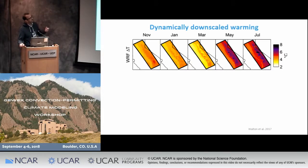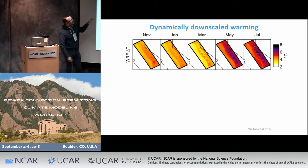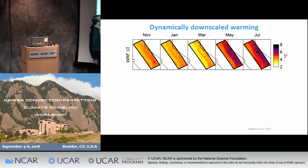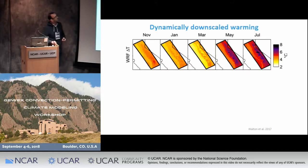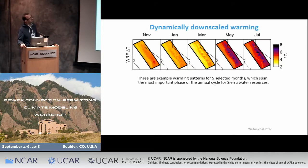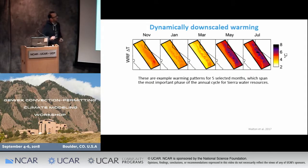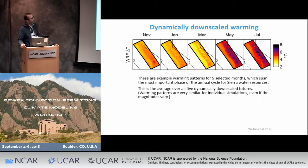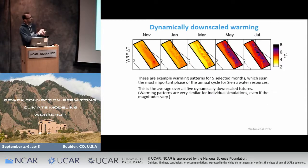These are dynamically downscaled warming patterns for the Sierra domain. Here is the California border, the coast, San Francisco, and the Sierra Nevada domain. This shows the warming patterns for five months that are very important for the annual cycle of water in this region, spanning the wet season basically, averaged over all five dynamically downscaled models. The magnitudes differ across models but the patterns are actually quite similar.